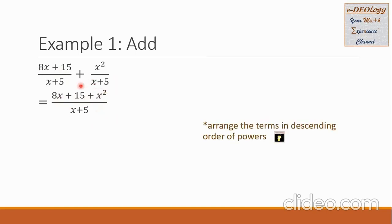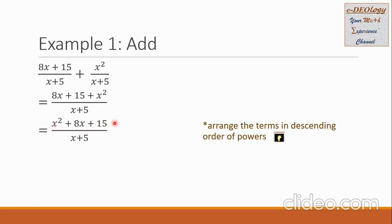Let us arrange our numerator in descending order of powers. It means our x squared comes first, followed by the 8x, and then plus 15. In the denominator, it will just be x plus 5.